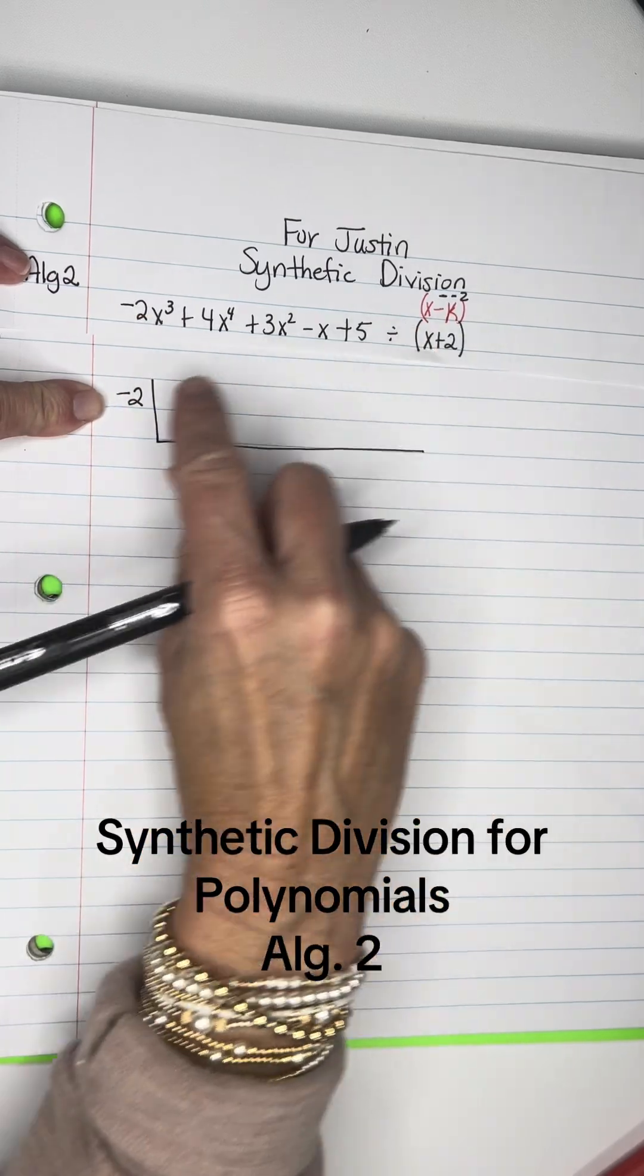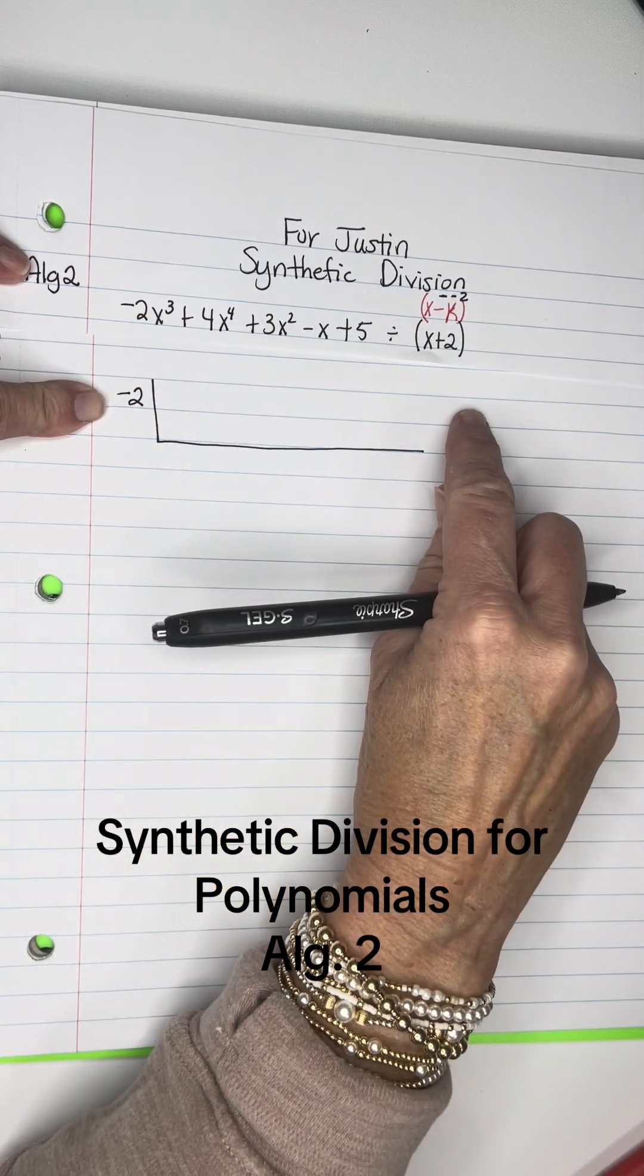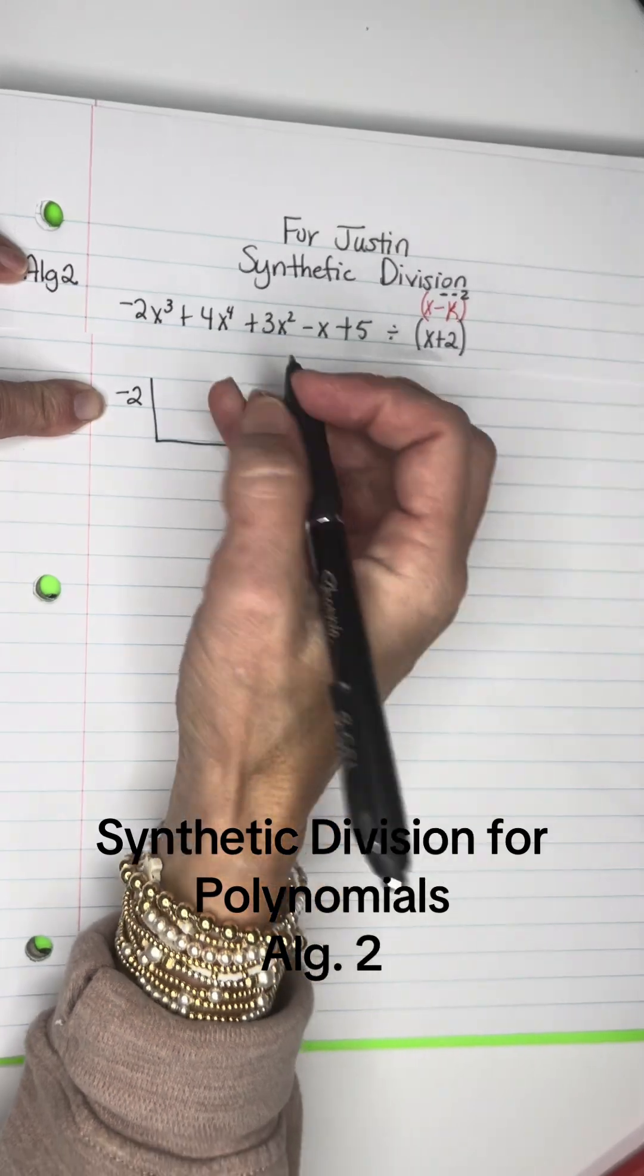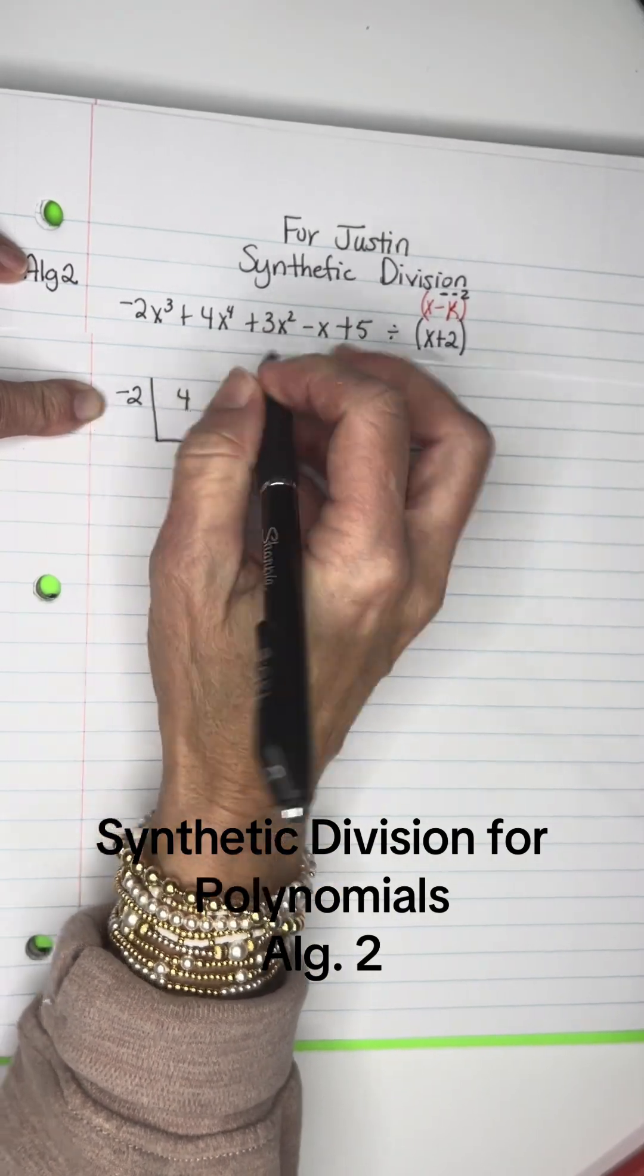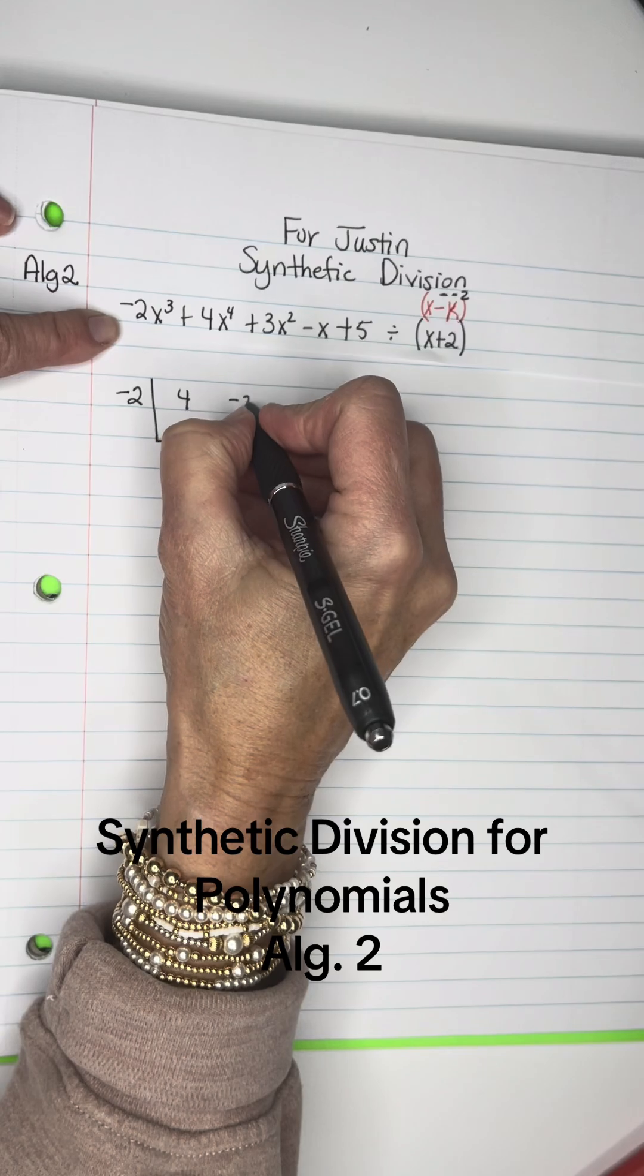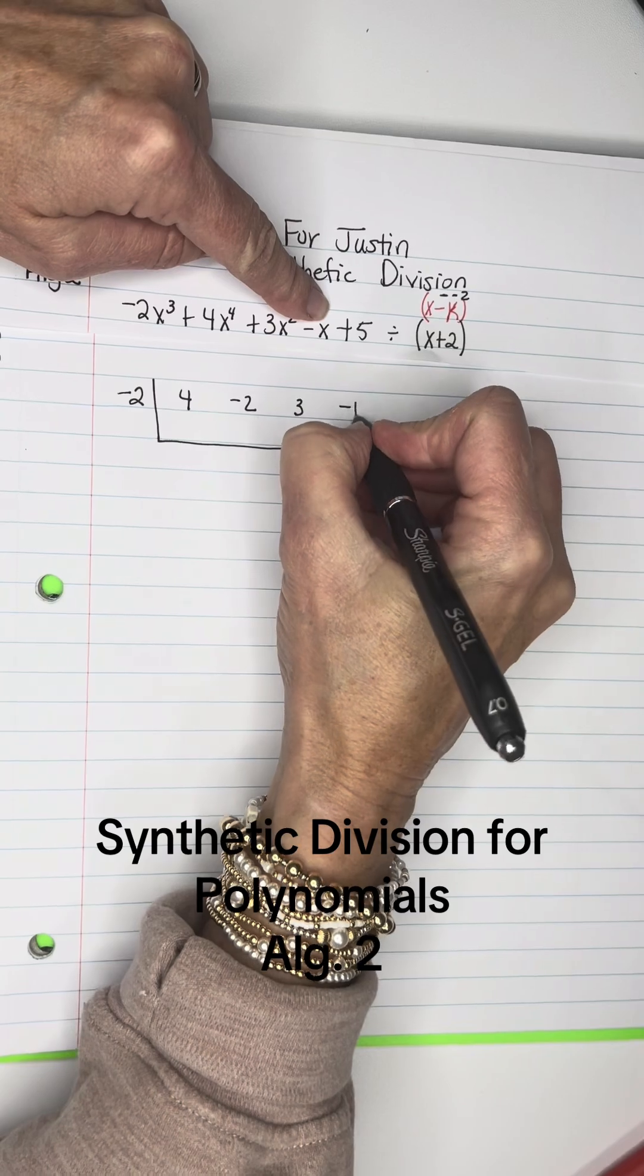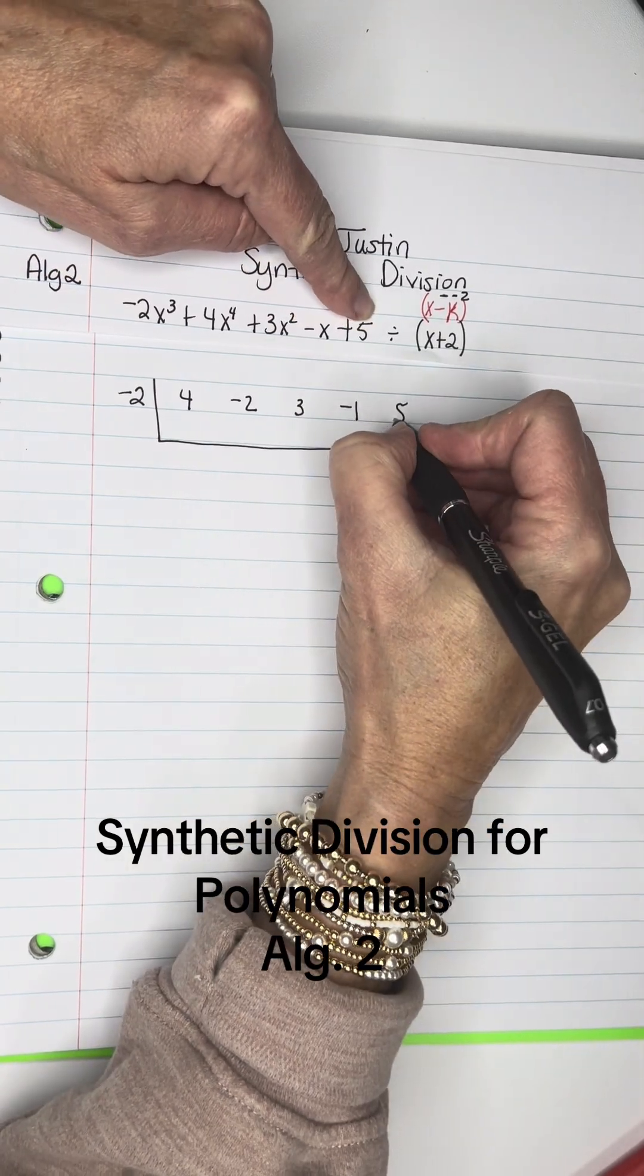So, negative 2 is what I will place here. Now, these coefficients are going to go here, they must be in descending order, and make sure that nothing is skipped. So, the X to the fourth is the highest exponent, so 4 will be first, and then negative 2, and then 3, and then negative 1, and then 5.